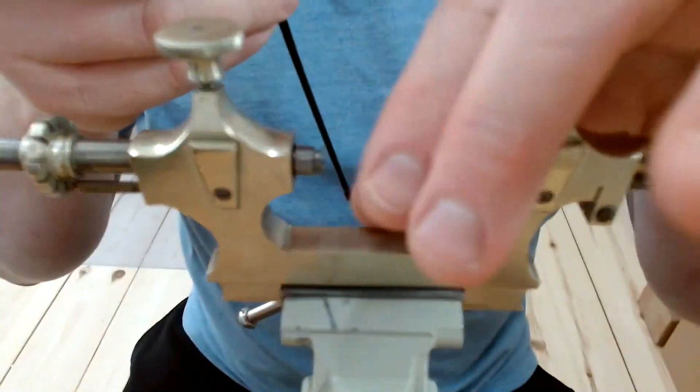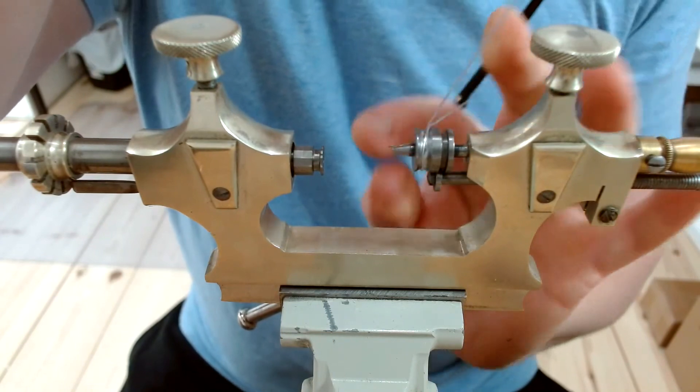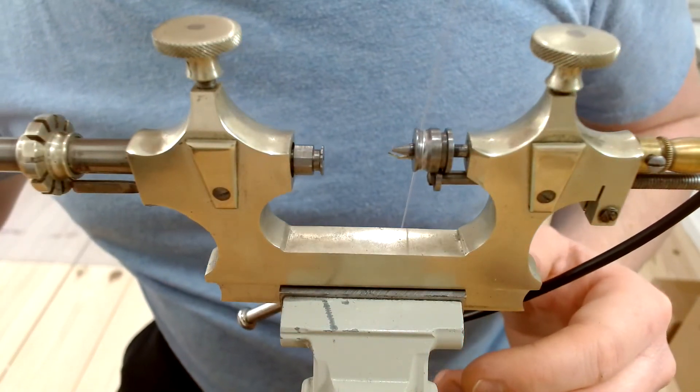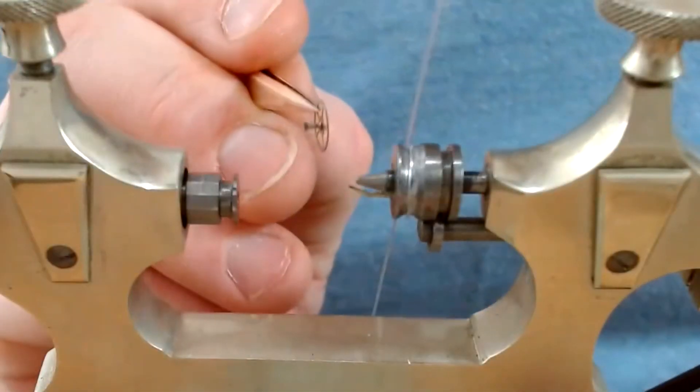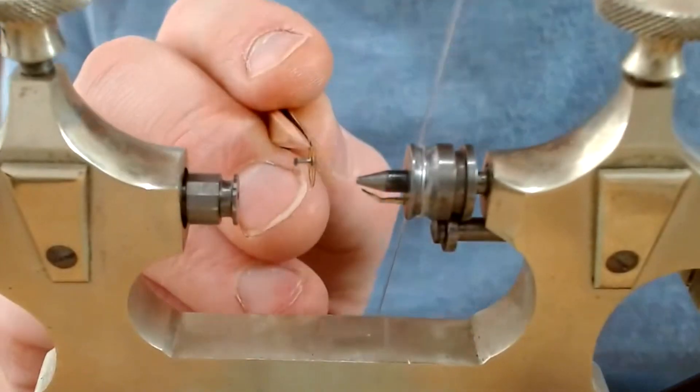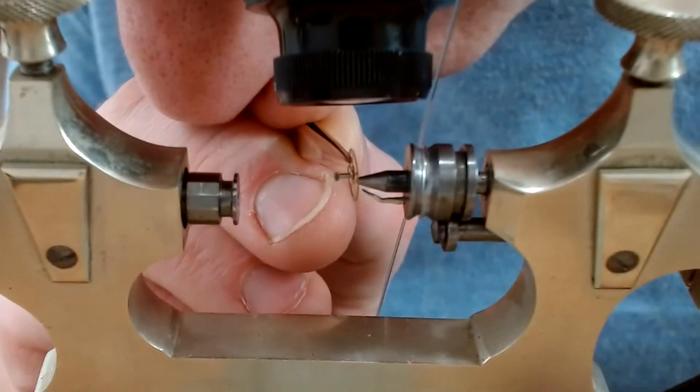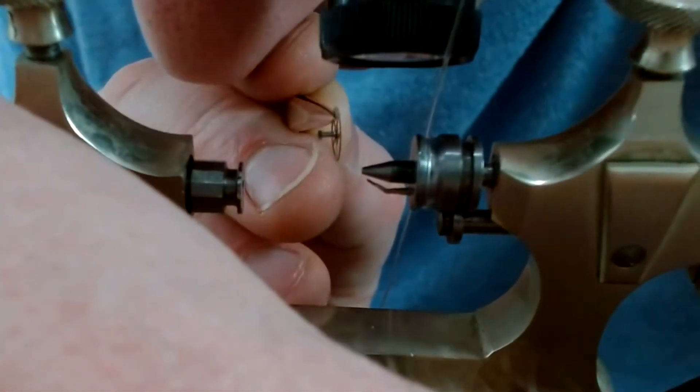Well now that we've looked at what we're going to be using, let's get the bow mounted up in the Jacko tool and get the wheel inserted so that we can seat it properly and then start polishing. Here's the train wheel that's going to be put in place. It's actually from a Tudor date model and it is a third wheel that we're going to be polishing today.